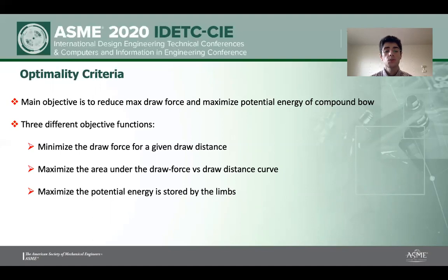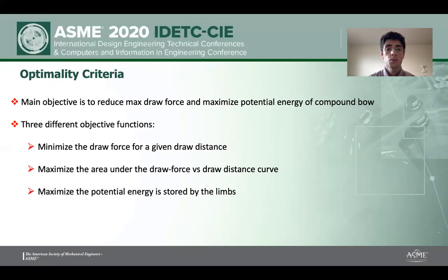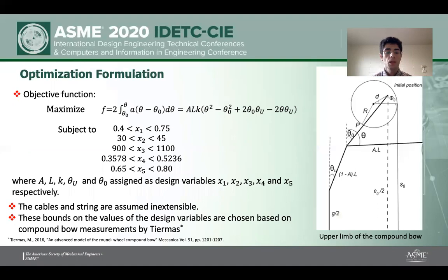If we maximize this area, it also means we are maximizing the force, so we need an additional constraint to keep force within a certain range. As a third option, we can maximize the potential energy stored by the limbs. Objective functions two and three both refer to potential energy but written in two different ways. In this study, we chose the third option — the potential energy stored by the limbs. We can write the objective function in this way, using the equation introduced by Thiermans in 2016.